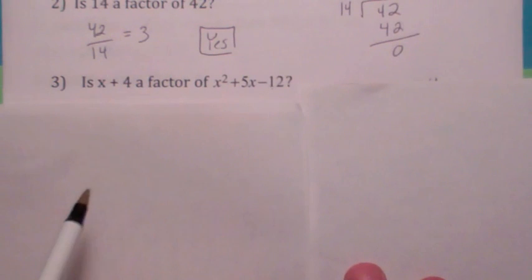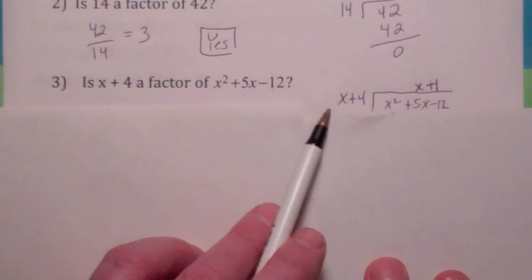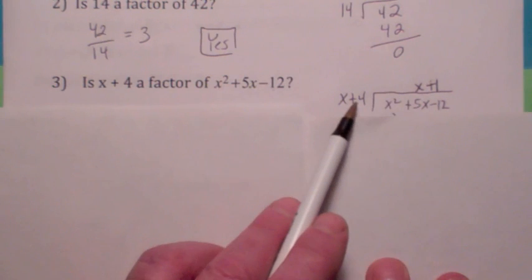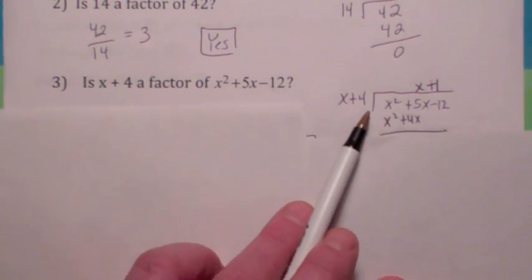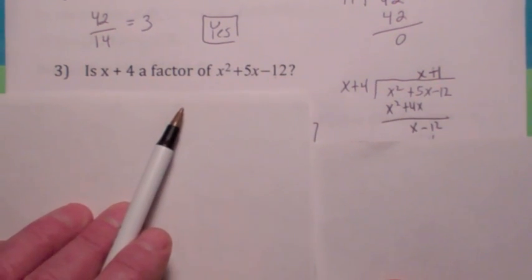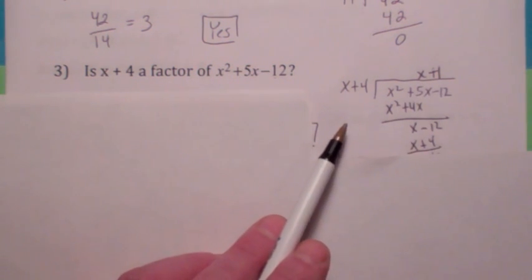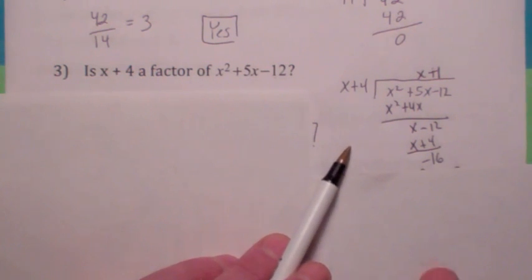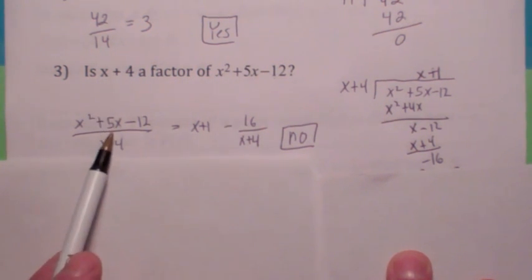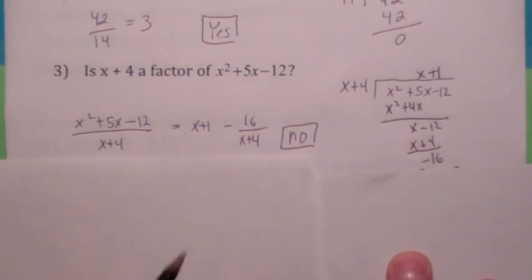With polynomials it works the same. The divisor goes on the outside and the dividend goes on the inside. We ask ourselves: what do you multiply x by to get x squared? The answer is x. When you multiply each term by x, you get x squared plus 4. Now when you subtract, those cancel and you get x minus 12. What do you multiply x by to get x? Plus 1. Multiply each by 1, then subtract — you get negative 16. So the answer is no, it's not a factor. But you could say that when you divide this polynomial by this one, you get a quotient of x plus 1 plus the remainder divided by the divisor.